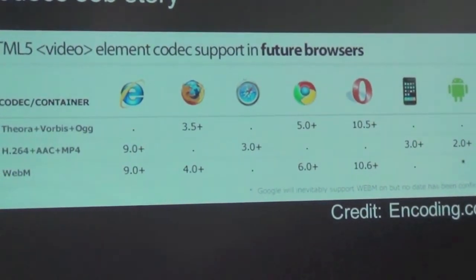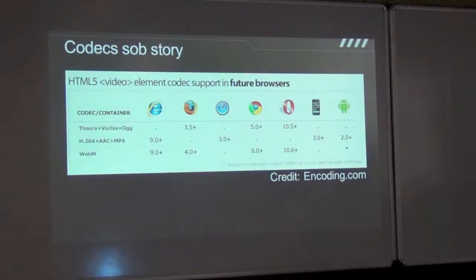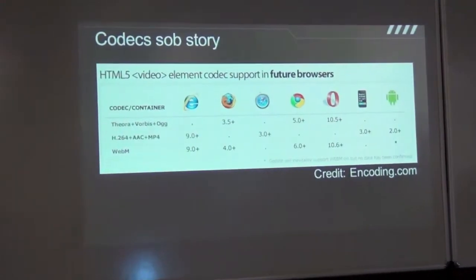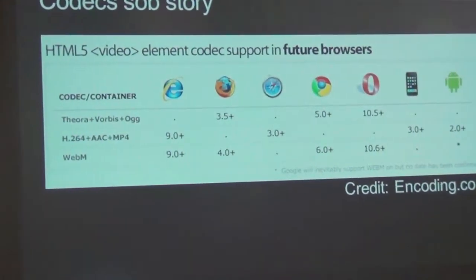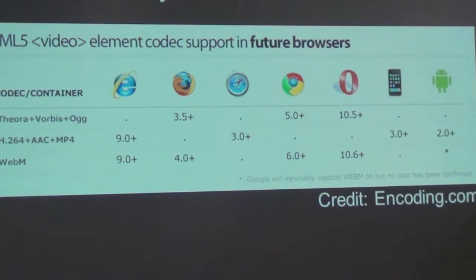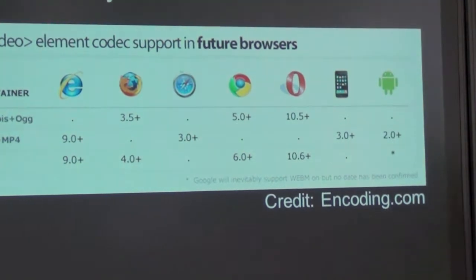There's this funny XKCD cartoon where somebody says for this technology we have all these competing options with no uniformity, so I'll create a new one to unify them — and that just becomes the next item in the list. That's essentially what happened here. You have IE, Firefox, and so on. This is basically a matrix of codec support. There are three main codecs: Theora in the OGG container, H.264 video codec in MP4, and WebM. Chrome supports Theora and WebM, Safari supports H.264, and IE supports H.264 and kind of supports WebM.